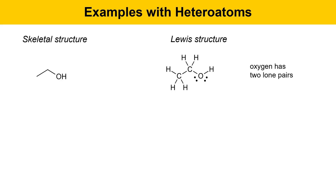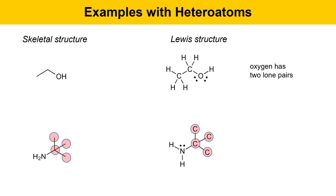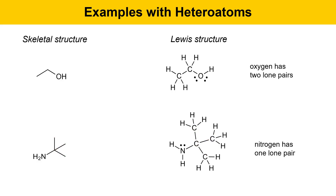Here's another example of a skeletal structure that has a nitrogen in it — this is an amine, specifically tertiary butylamine. It has four carbons indicated by the pink circles. In the Lewis structure, those four carbons are indicated as well. Notice that the lone pair is drawn in on nitrogen — nitrogen has one lone pair. Then each one of these carbons needs to make enough bonds to hydrogen to fill out its valence number of four, so there are three CH3 groups attached.